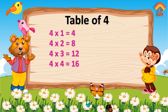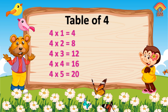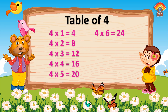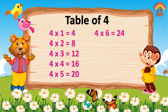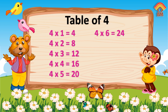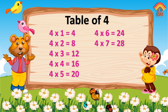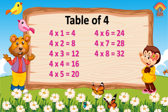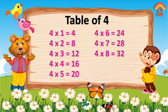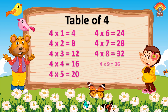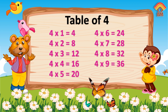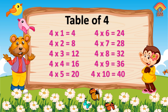Four fives are twenty. Four sixes are twenty-four. Four sevens are twenty-eight. Four eights are thirty-two. Four nines are thirty-six. Four tens are forty.